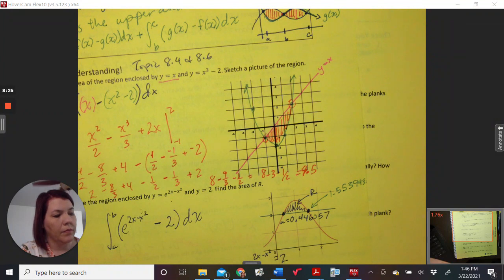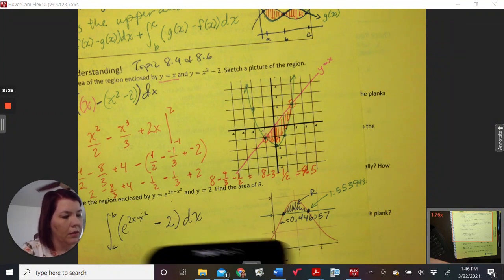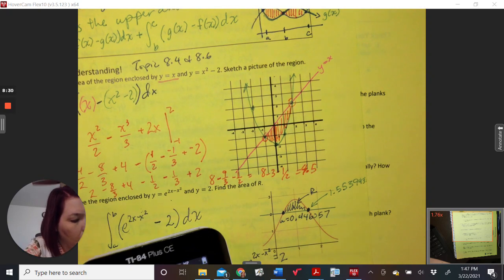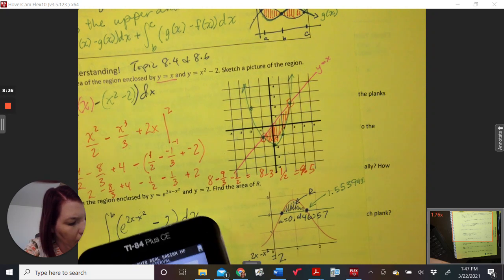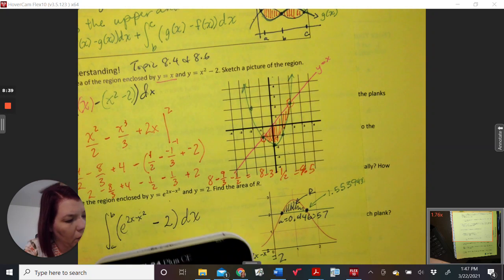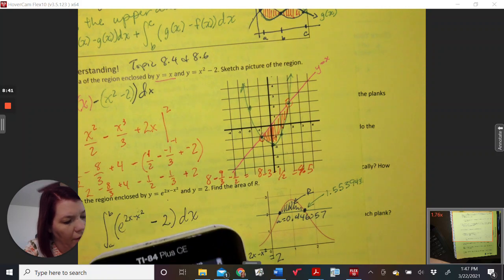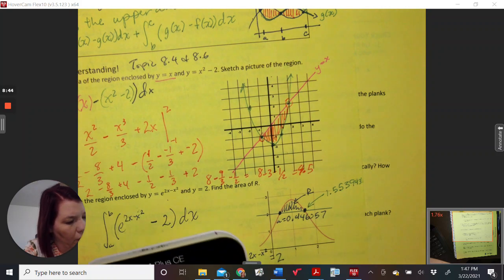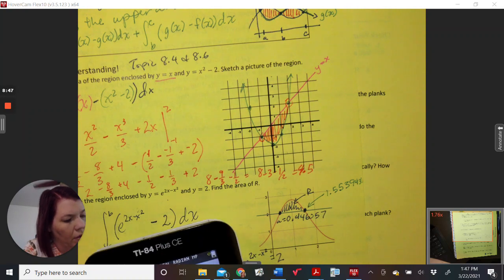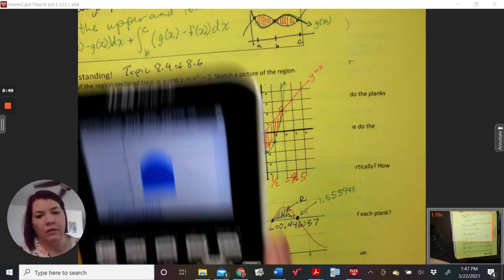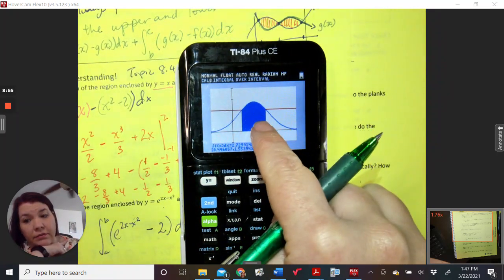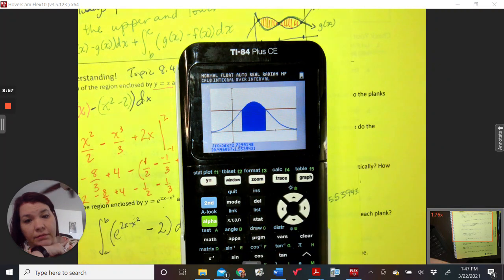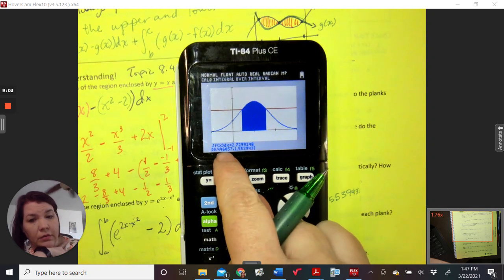So, lower limit will be 0.304605.7 and my upper limit will be the other number, 1.055394.3. Gives me this. And notice what it did. I love the way it came out because it drew it. See how it's counting all this area that's not really there? So, that's incorrect answer. That's the number. So that's my interval. That's my number. But I need to subtract 2 from this number because I have 2 underneath it.